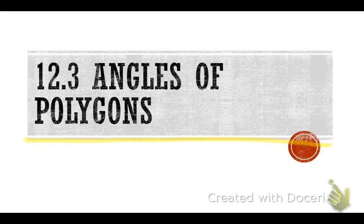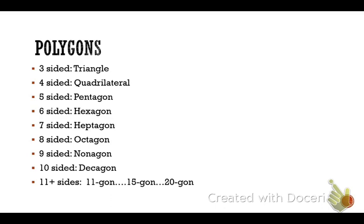We also need a quick refresher on all of our polygons. This isn't necessarily something you have to write down every single one of them — most of you might have them memorized. However, there might be some that you don't know. So let's go through and review our polygons. A three-sided polygon — triangle. Four-sided — quadrilateral. Now we know there are different kinds of quadrilaterals, but that doesn't matter for this lesson. So it's just quadrilateral.